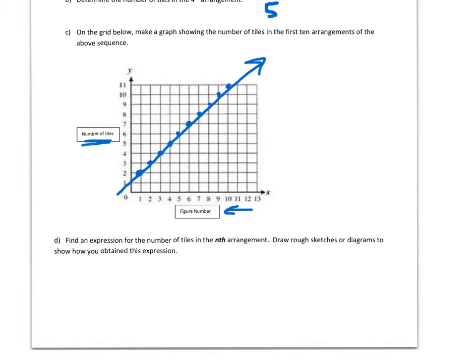And then Part D asks to find an expression for the number of tiles in the nth arrangement. So we will use n for the figure number. Right? So in our previous examples, we had figure one had two. So it is n plus one.